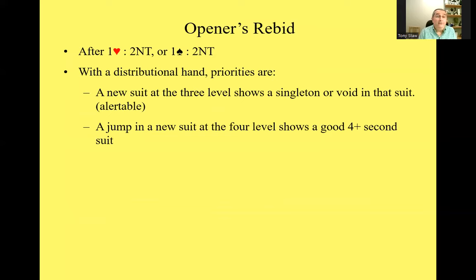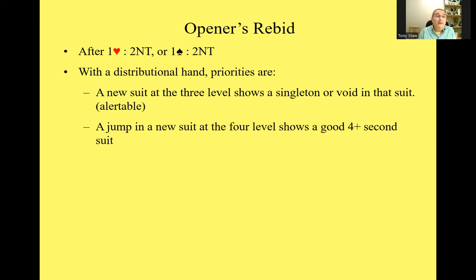After one of a major, Two No Trump, there are actually five different responses you can make. The person who invented this convention — Oswald Jacoby — thought of meanings for all possible bids. If you bid a new suit at the three level, for example one heart Two No Trump, three clubs, that shows a singleton or void in that suit, and that is alertable. For those of you familiar with splinter bids, it's very much like that.